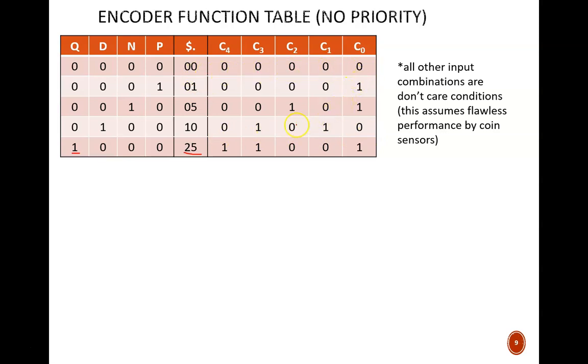Why are there five output columns? Because 25 is the highest number to count to, and that requires 5 bits. The equations become simple to develop from this table. Let's go one output column at a time. When is C4 high? Only when a quarter is input. Therefore, C4 equals Q.